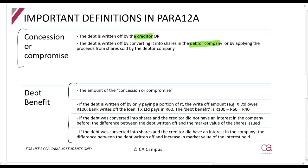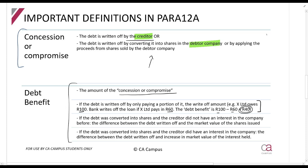What is the debt benefit that you get? The act tells us: first, it is whatever amount has been written off by the creditor. If the loan is written off after paying a portion of it, the debt benefit is the amount saved. For example, X Limited owes 100 rand. The bank writes off the loan if X Limited pays 60 rand. So how much did they save? 100 rand minus 60 rand equals 40 rand - that is the debt benefit.